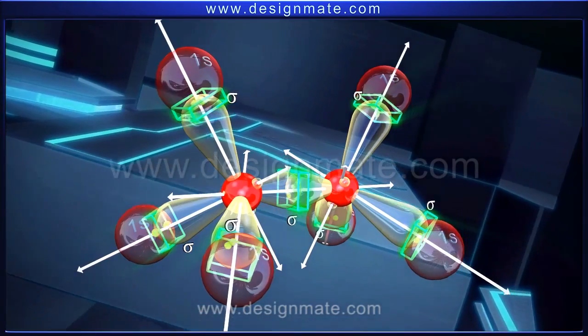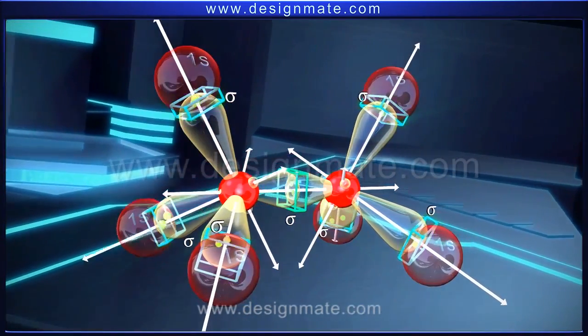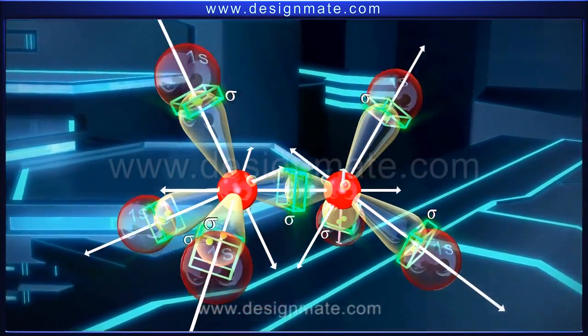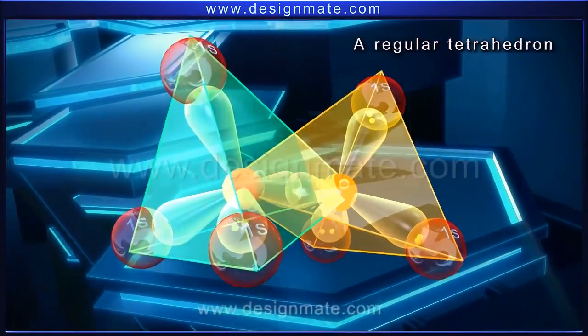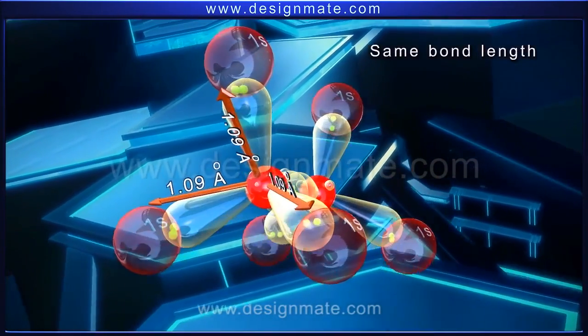Thus, both the carbon atoms are surrounded by three carbon-hydrogen sigma bonds and one carbon-carbon sigma bond. These bonds are directed along the corners of a regular tetrahedron and all carbon-hydrogen bonds are of the same bond length.